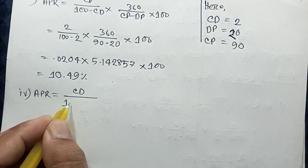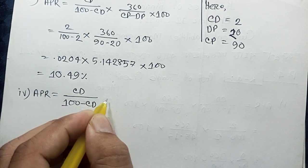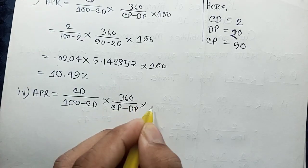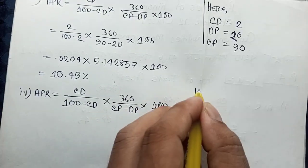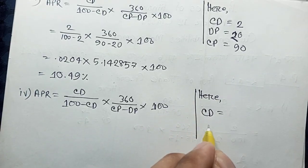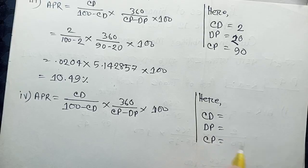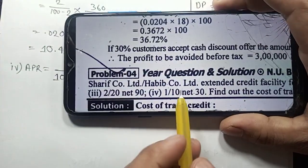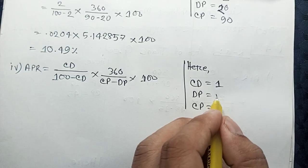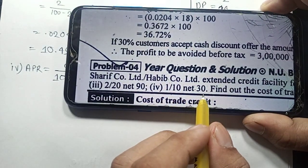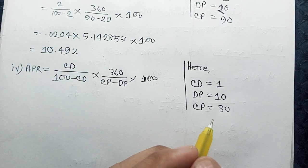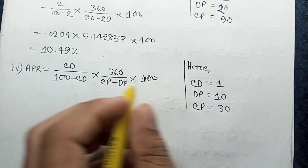The formula is: CD divided by (100 minus CD), multiplied by 360 divided by (CP minus DP), multiplied by 100. Here: cash discount, discount period, and credit period. This is the 1% discount for 10 days. Credit discount is 1%, discount period is 10 days, or if you have a discount for 30 days, credit period is 30.